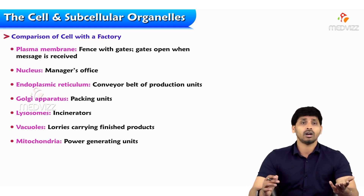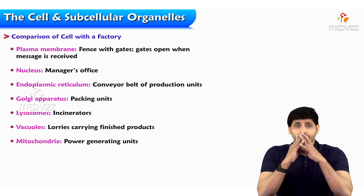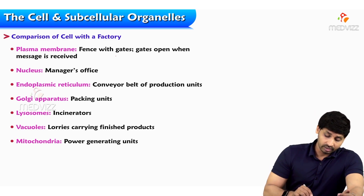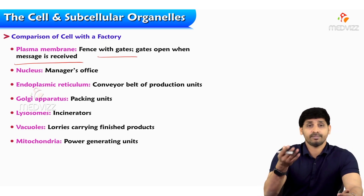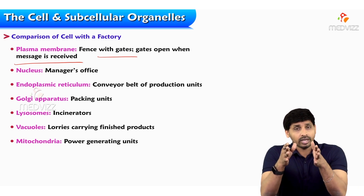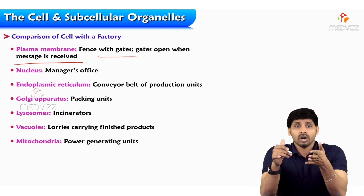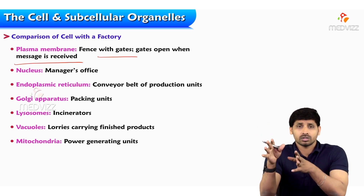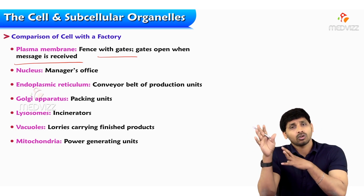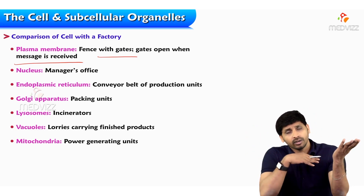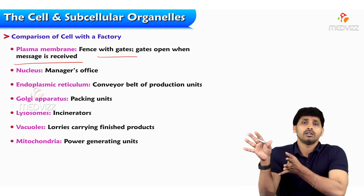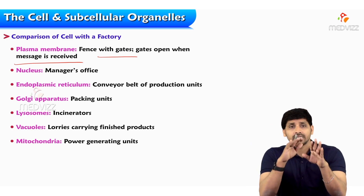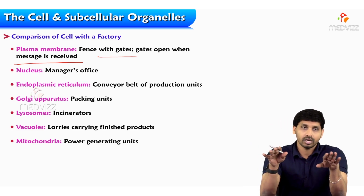Another way to understand this is by comparing a cell to a factory. The plasma membrane is like a fence with gates — gates open when a message is received. In a production factory making clothes, once the clothes are stitched and an order comes from outside, all the ordered material is loaded into a lorry and allowed to pass through the gate. Similarly, the plasma membrane acts like a gate — like fencing.